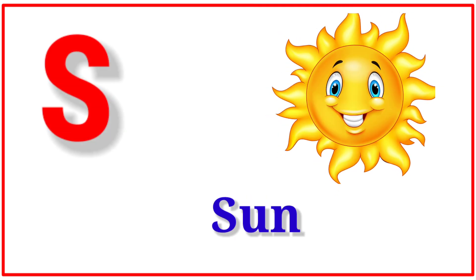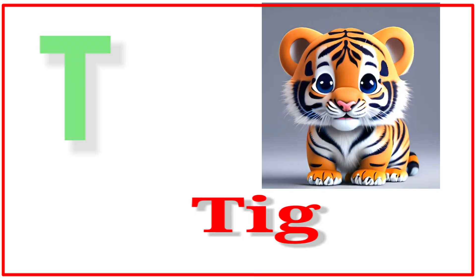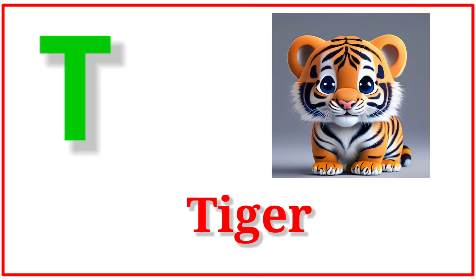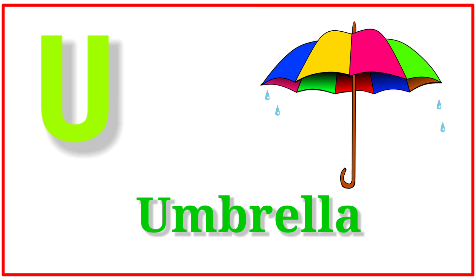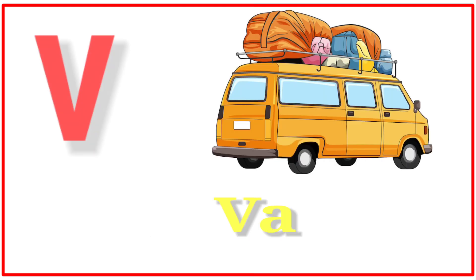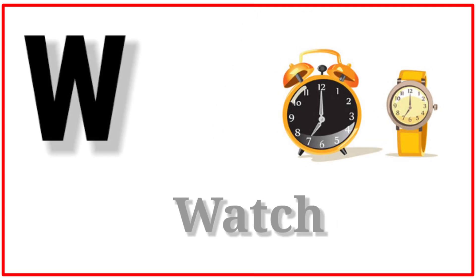T for tiger. U for umbrella. V for van. W for watch. X for xylophone.